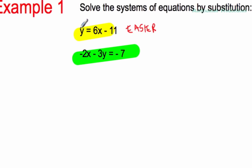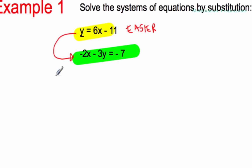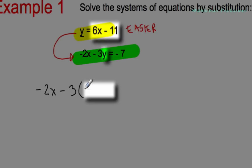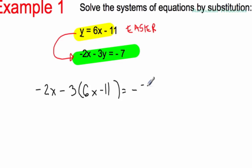My first equation says that y equals 6x minus 11. We can use this information and plug it into the second one to solve for one of the variables. So instead of y, you can substitute in 6x minus 11 into the other equation: negative 2x minus 3. Instead of y, I'm going to use 6x minus 11, equals negative 7.